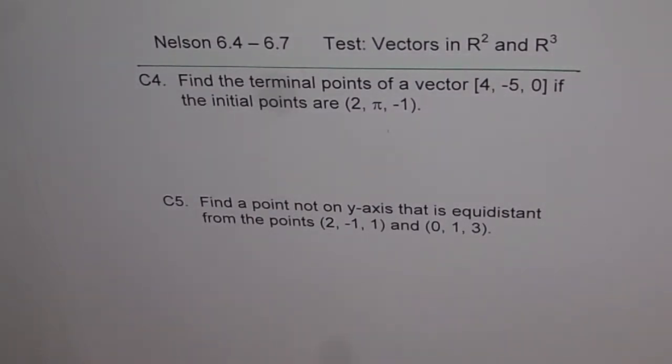And question number 5 is C5. Find a point not on the y-axis that is equidistant from the points (2, -1, 1) and (0, 1, 3).